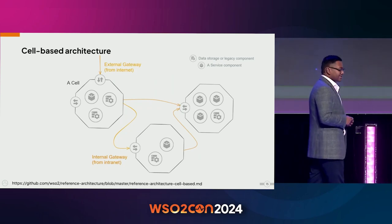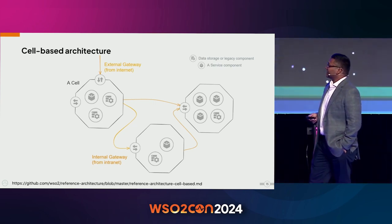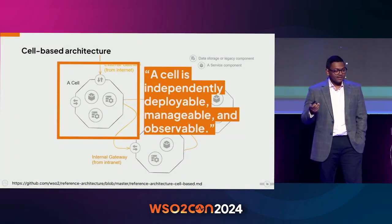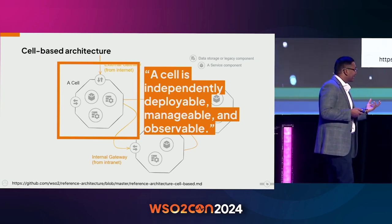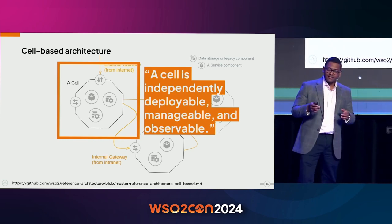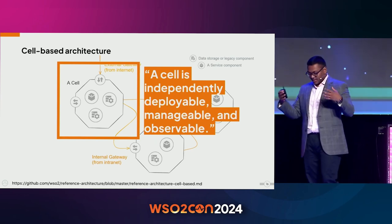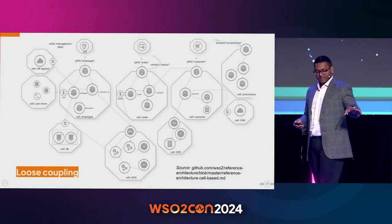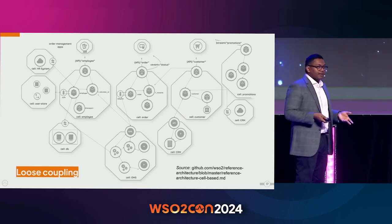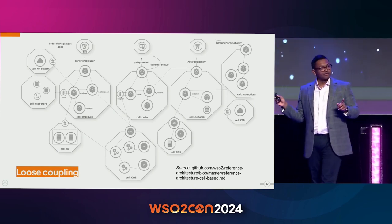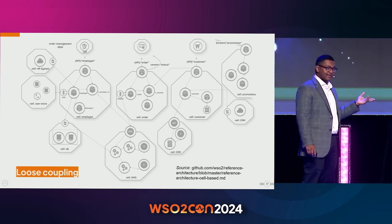I won't be able to get into too many details but there are other sessions on cell architecture I encourage you to join. In this example we have three cells, and by definition every cell is independently deployable, manageable, and observable — all network ingress comes through either an external or internal gateway. These are all abstractions not tied to specific API gateways or containerization technologies — simply a way to model a domain into an architectural implementation.